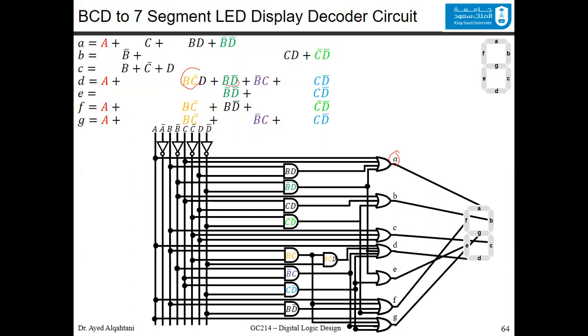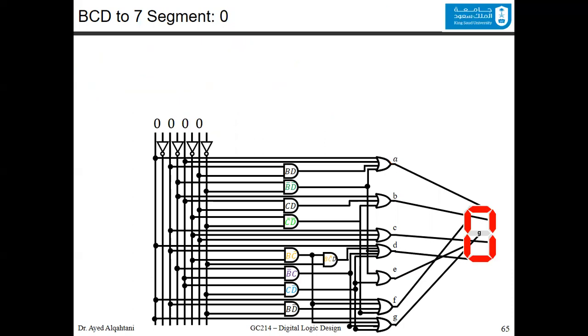To show some examples, we will show all the cases for all the numbers. If we have zero, we will enter a binary value 0000, and it should light up like this. If we input one, it will light up as you can see here. If we input two, it will light up like that. If we input three, it will light up as three in the display.